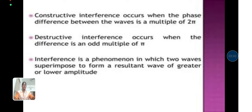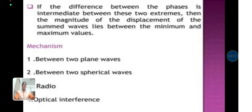Interference is a phenomenon in which two waves superimpose to form a resultant wave of greater or lower amplitude. If the difference between the phases is intermediate between these two extremes, then the magnitude of the displacement of the summed waves lies between the minimum and maximum values.